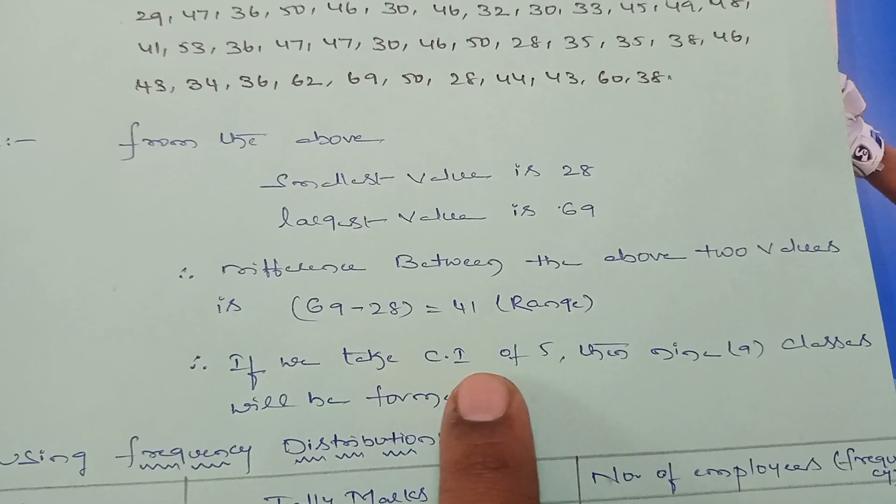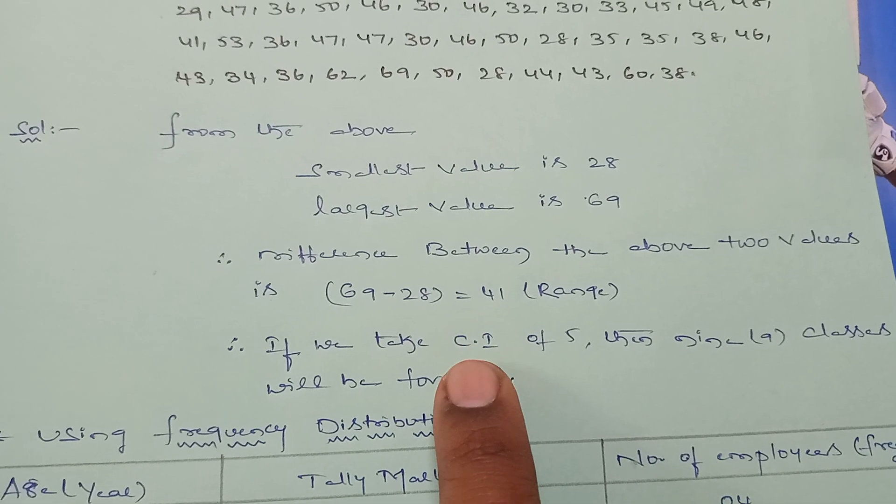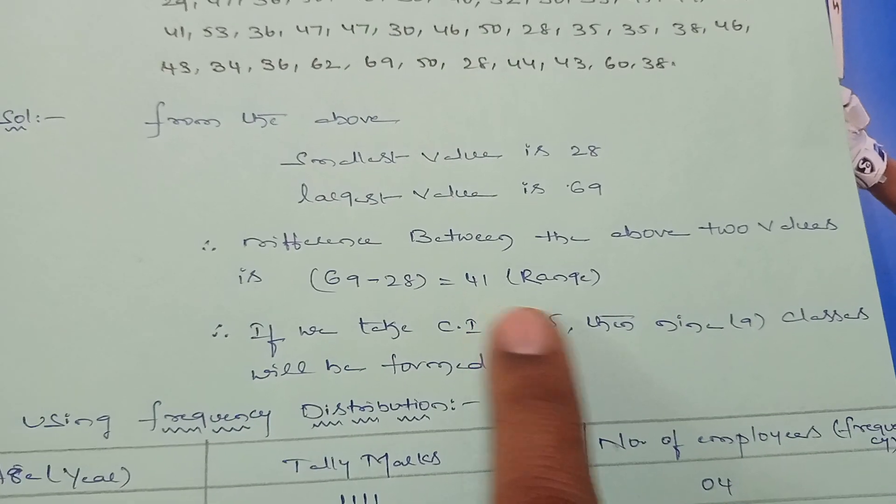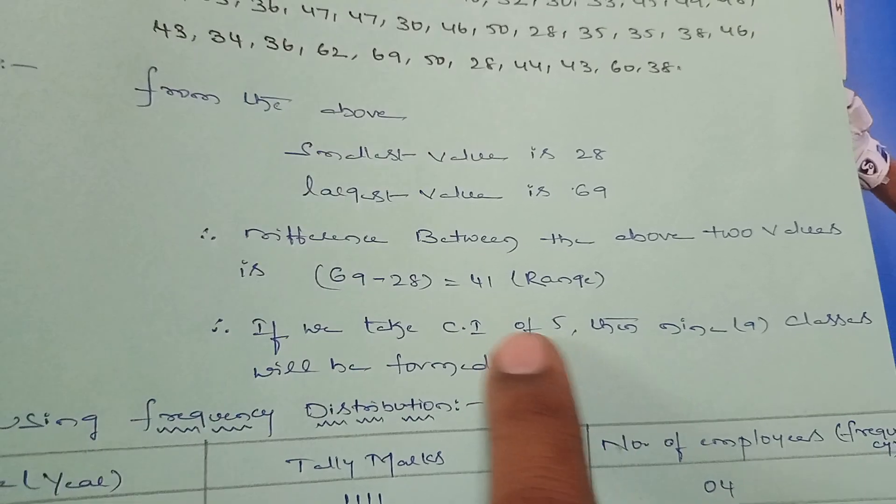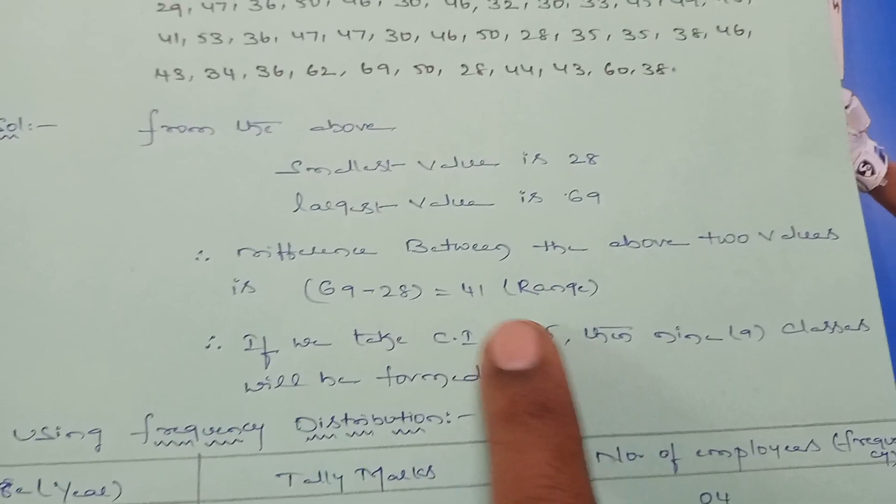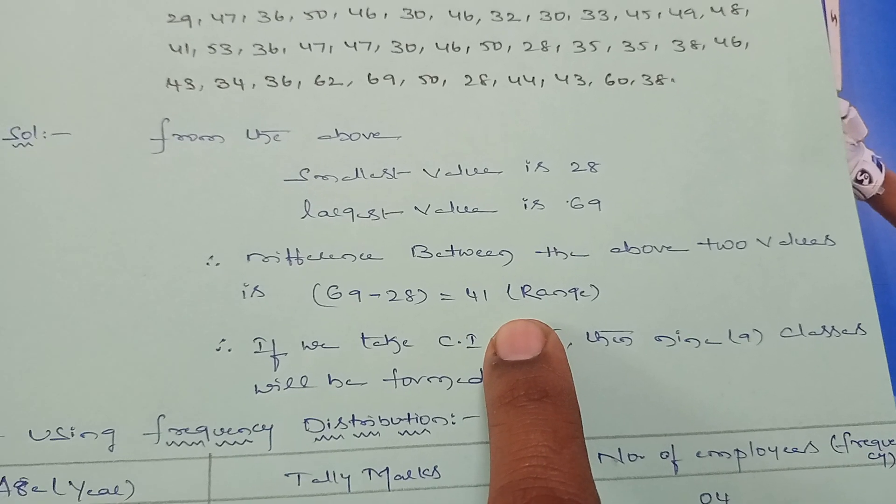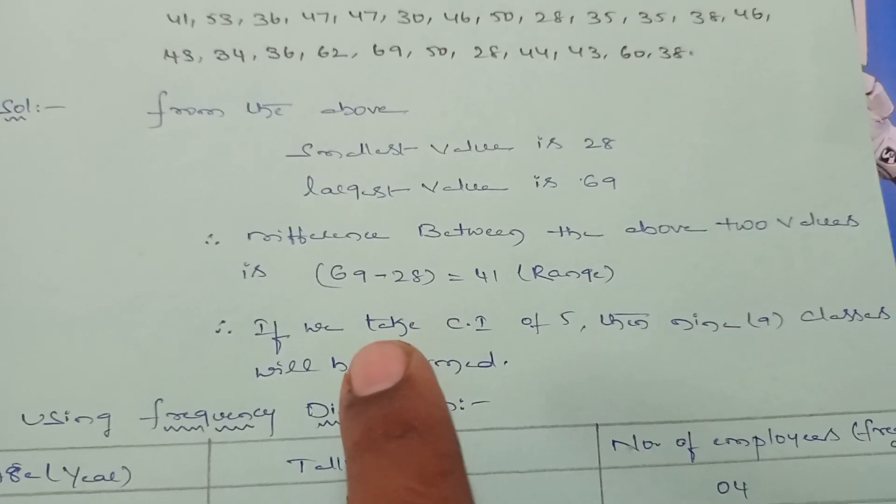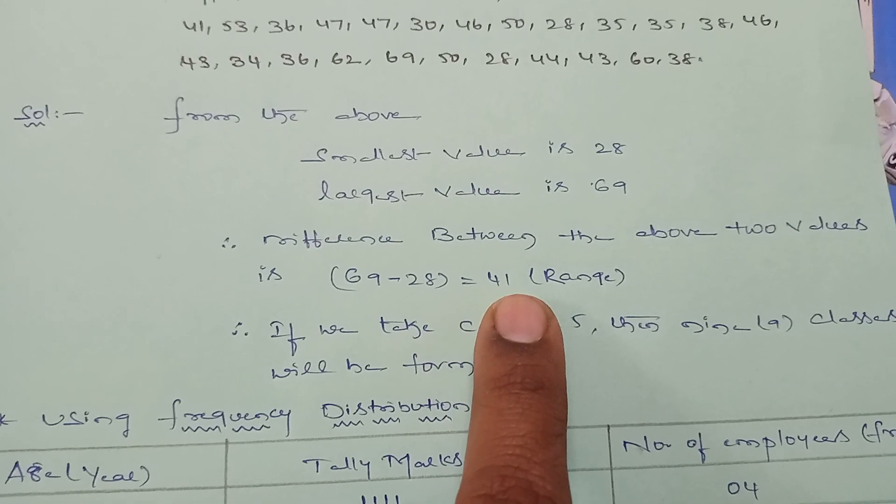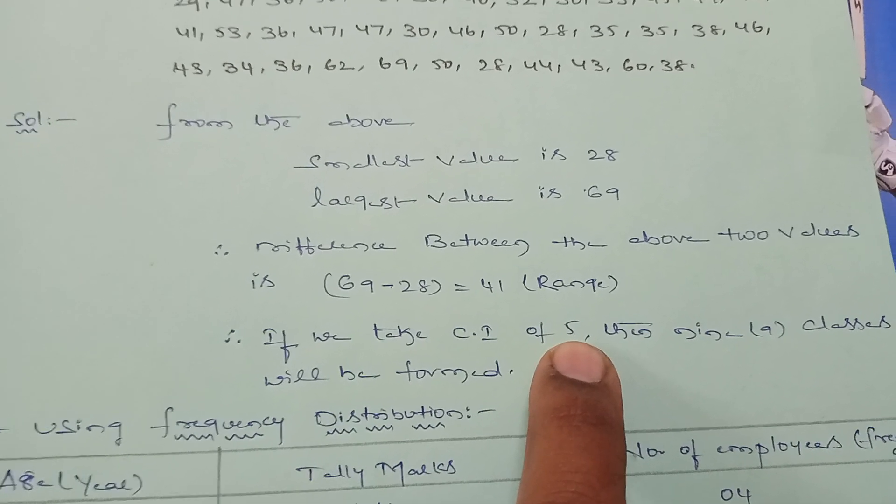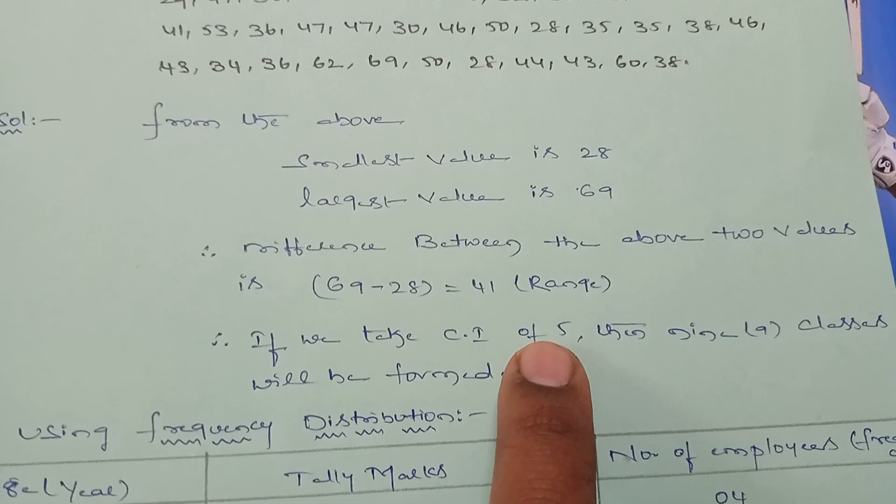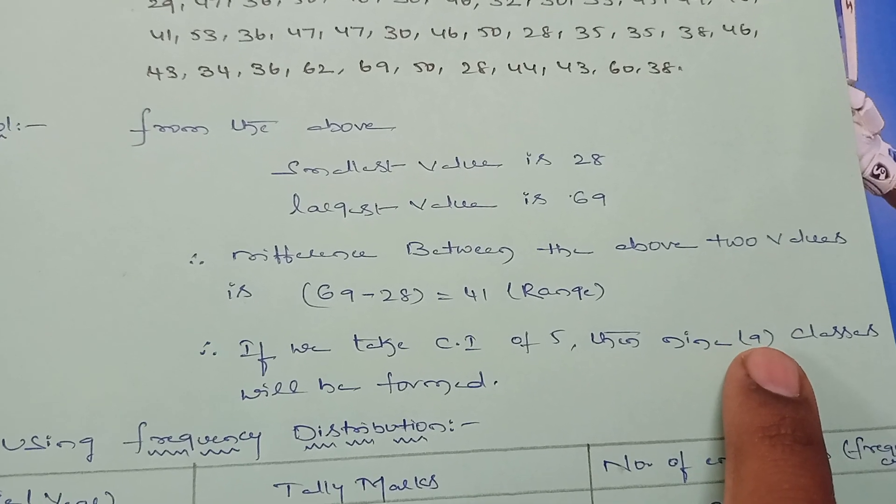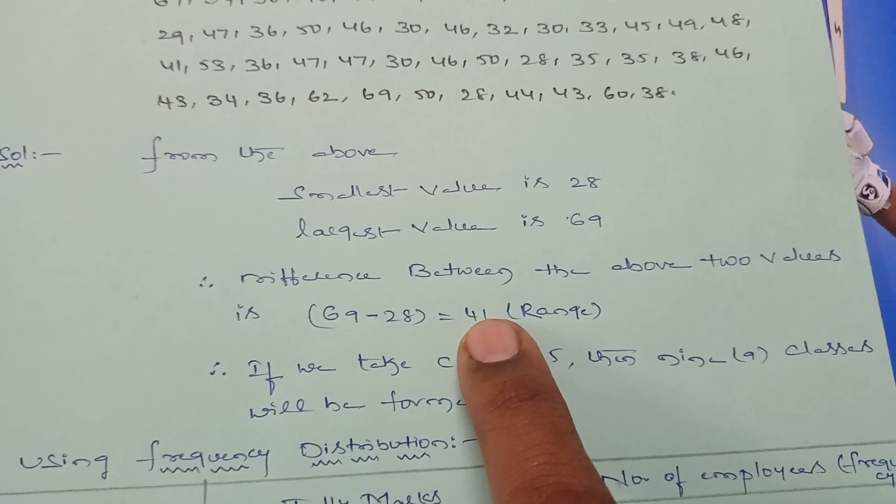We got 41 as the range. If we take class intervals of size 5, we get 9 classes because 9 into 5 is 45, which is near to 41. If we take class interval of size 10, we get 4 to 5 classes. The difference between the upper boundary and lower boundary is 5, therefore we get 9 classes.